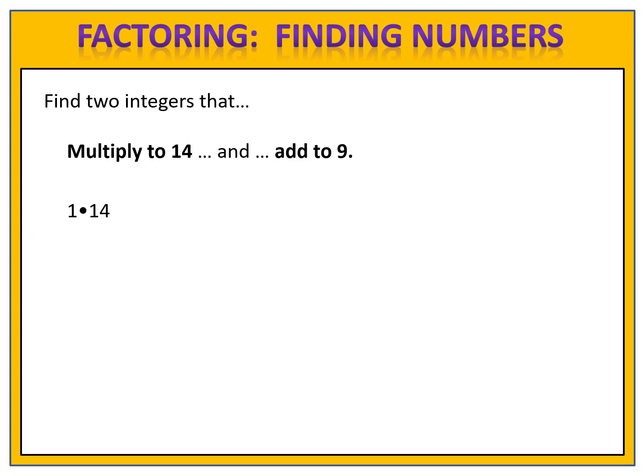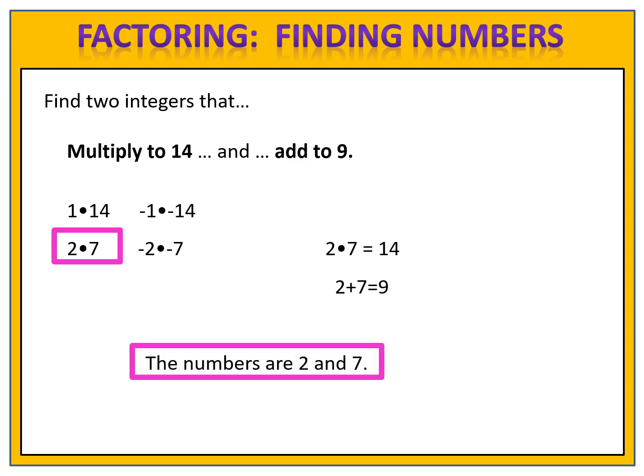The numbers that multiply to 14 are 1 times 14 and 2 times 7. Don't forget we also have negative numbers: negative 1 times negative 14, and negative 2 times negative 7. Which pair adds to 9? 1 plus 14 is not 9. Negative 1 plus negative 14 is not 9. However, 2 plus 7 equals positive 9. So 2 times 7 is 14, and 2 plus 7 is 9. The numbers are 2 and 7.